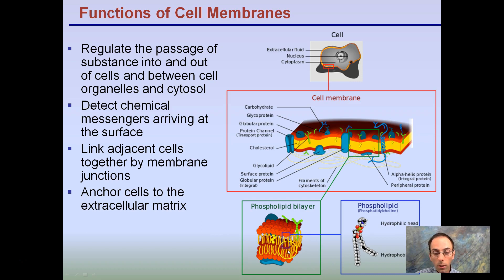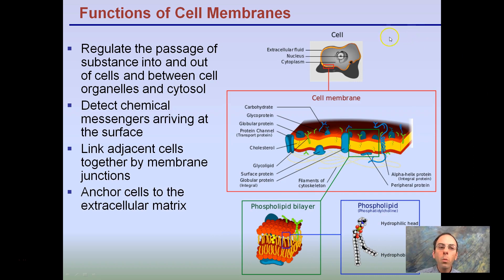If we look at one specific phospholipid, we identify the head and the tail region. The hydrophilic head likes water, and there's a hydrophobic tail. Together, this structure helps regulate the passage of substances into and out of cells, between cell organelles and the cytosol.